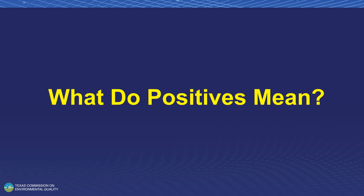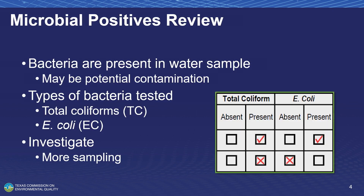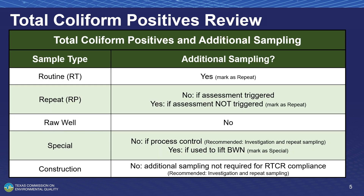So what do positives mean? When you get a total coliform positive sample, it is an indication that there is a possible contamination of the water. E. coli is a bit more of an acute public health situation, but with both of them, we want to make sure that we're taking those repeat samples right away to investigate what the problem might be.